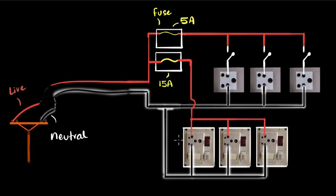So this circuit can handle up to 15 amperes, above which again the fuse will melt. So this way you can have a low power circuit, a low current circuit, and you can also have a high current circuit for your high power appliances.